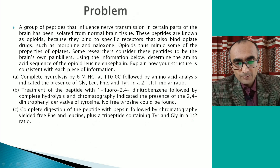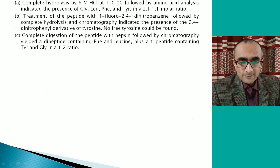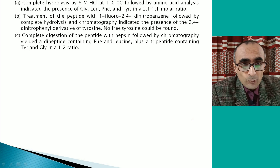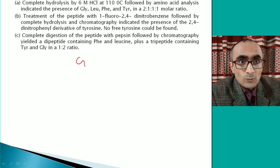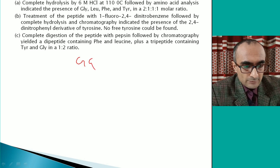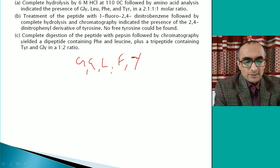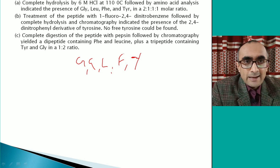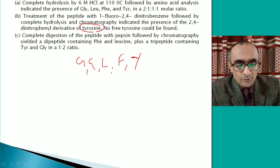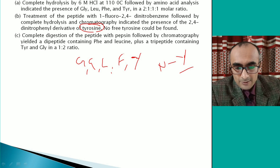Now let's look at an example of deducing a protein sequence from given information. You have a peptide that, when hydrolyzed with 6 M HCl at 110°C, gives four amino acids: two glycines (G), one leucine (L), one phenylalanine (F), and one tyrosine (Y) — five amino acids total with two glycines. When this peptide is treated with Sanger's reagent, it gives the dinitrophenyl derivative of tyrosine, meaning tyrosine is the N-terminal amino acid.